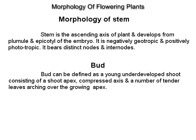Bud. Bud can be defined as a young, underdeveloped shoot consisting of a shoot apex, compressed axis and a number of tender leaves arching over the growing apex.